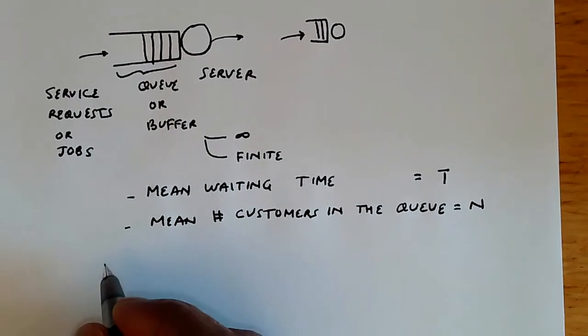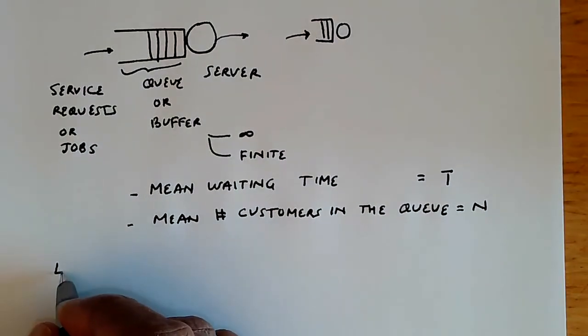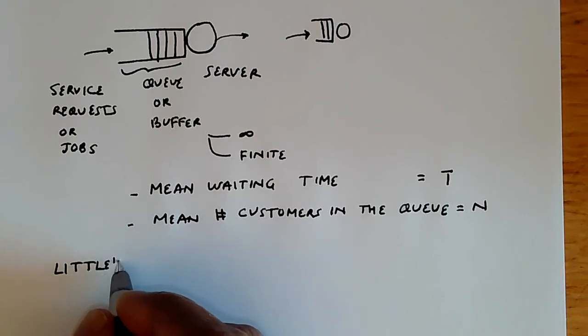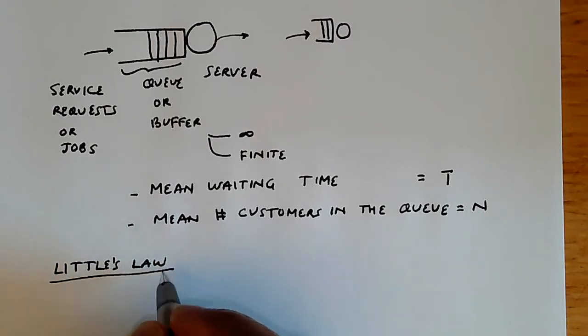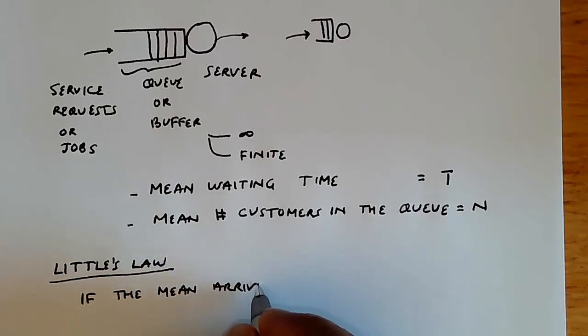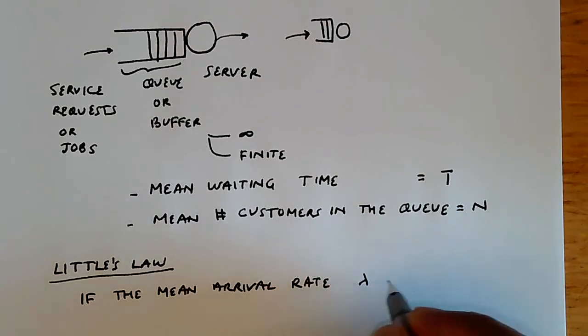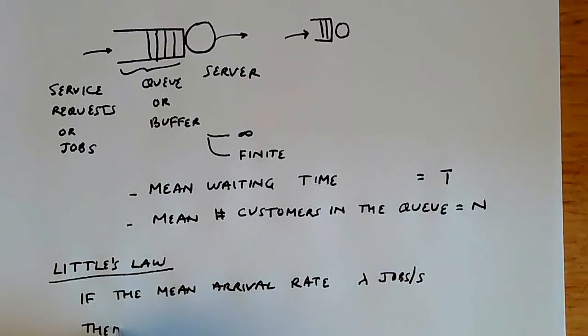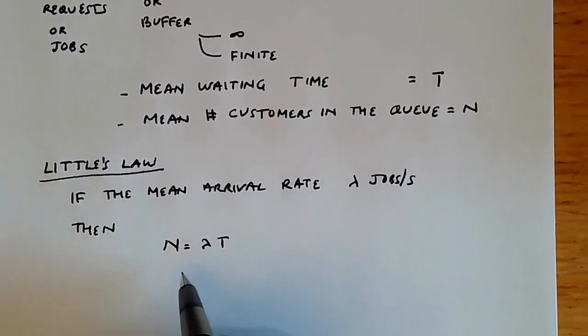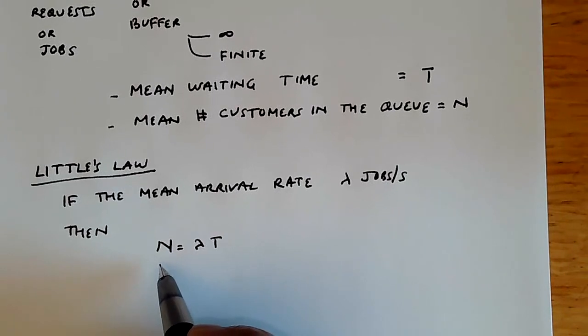And there is a very interesting relationship between the two, and this is called Little's Law. The Little's Law says that if the mean arrival rate is lambda customers or lambda jobs per second, so lambda jobs per second. Then N equals lambda t, which means that the mean number of customers in the queue is the product of the arrival rate and the mean waiting time.